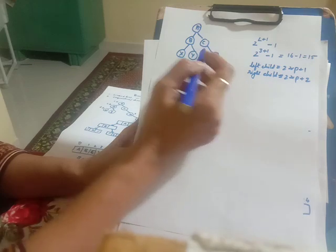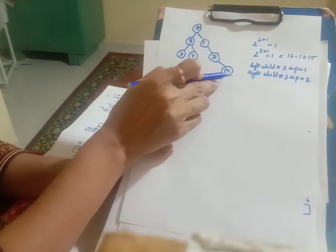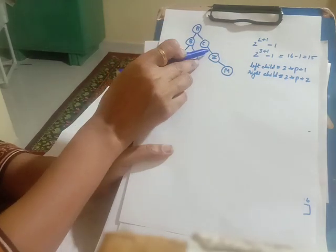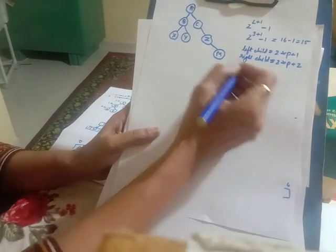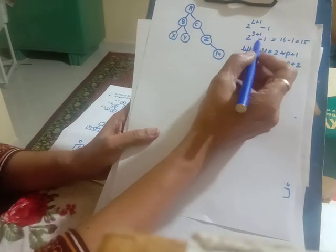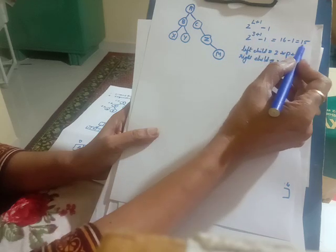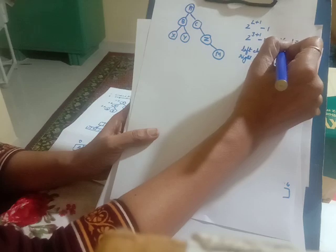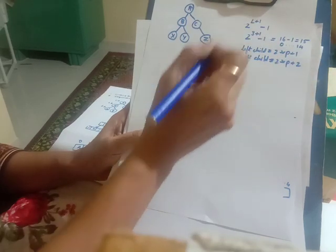The height of the tree is the length of the longest path. The longest path is from A to M and it is of size 3. So the total amount of space required is 2 to the power of 3 plus 1 minus 1, which equals 15, or from index 0 to 14.